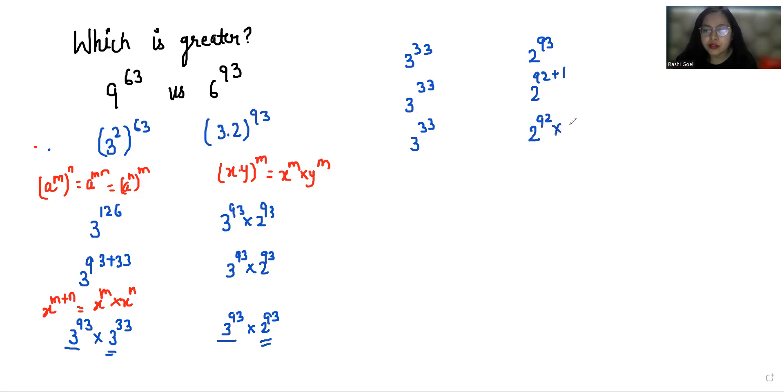So 2 power 92 times 2 power 1. This 2 power 92 I can write as 2 power 2, whole power 46, times 2 power 1.